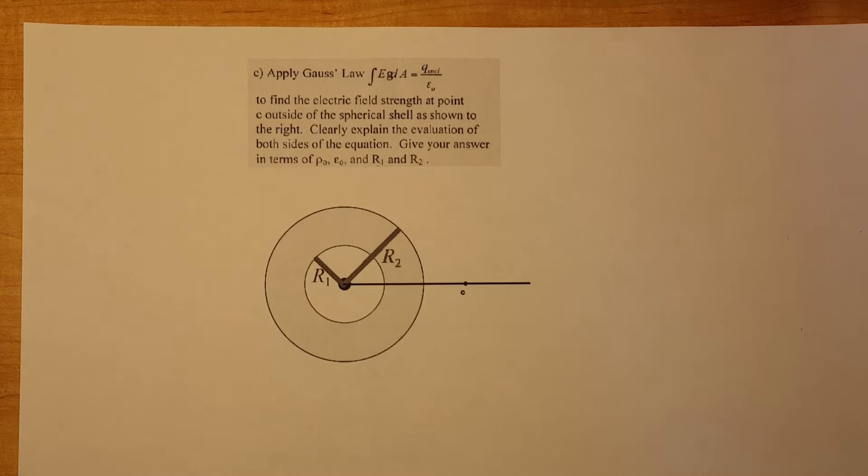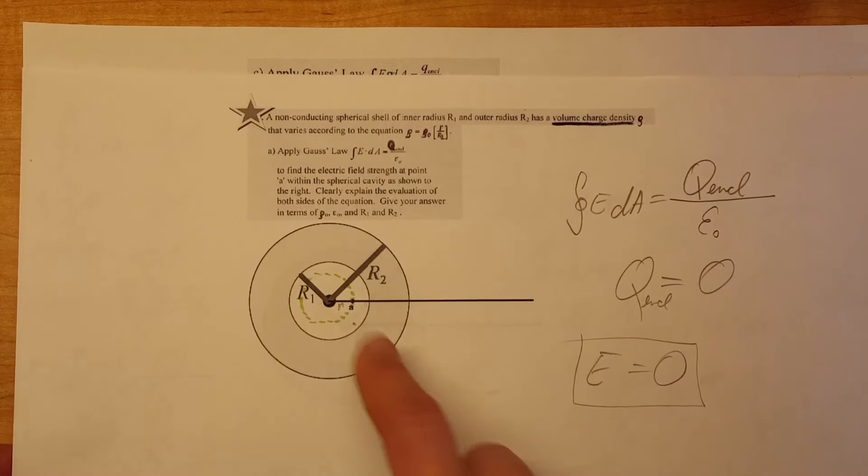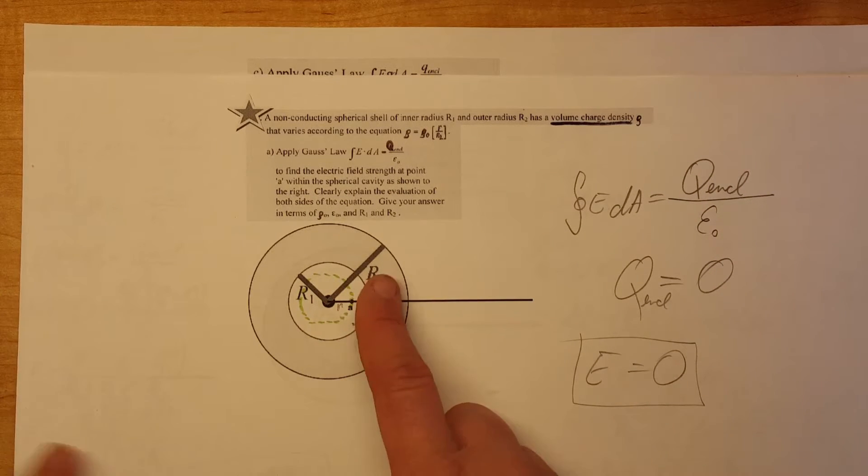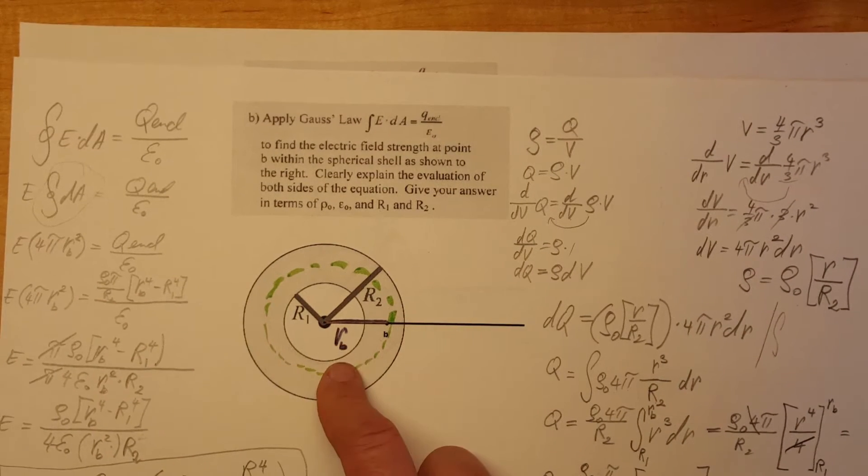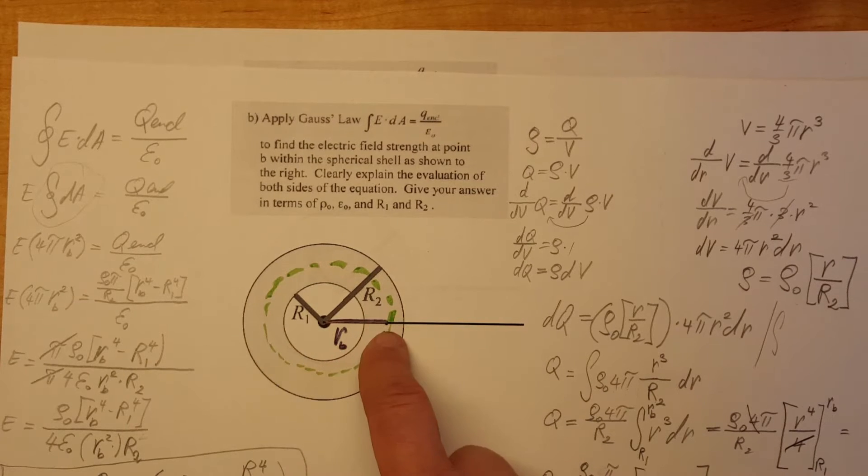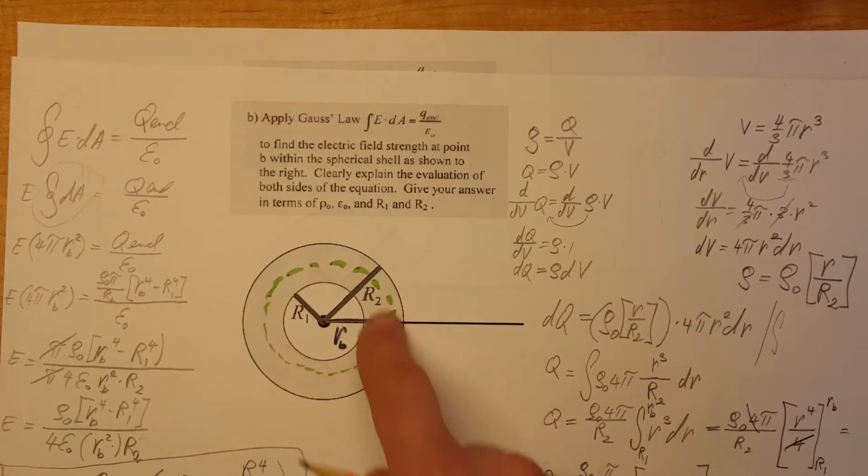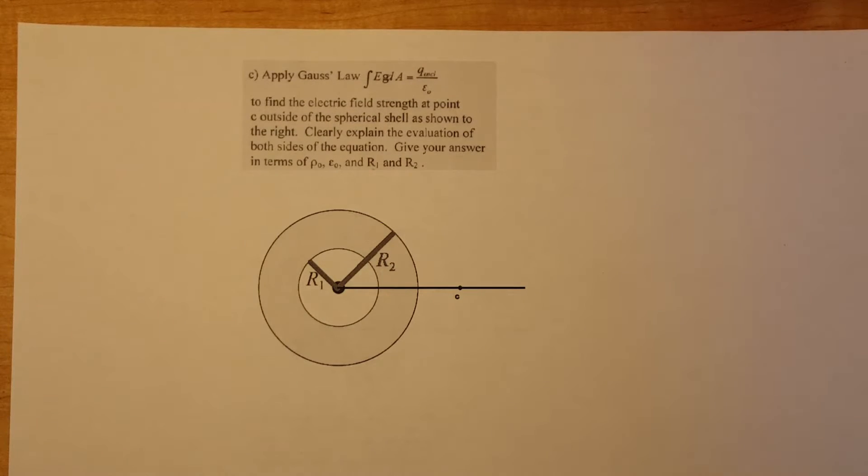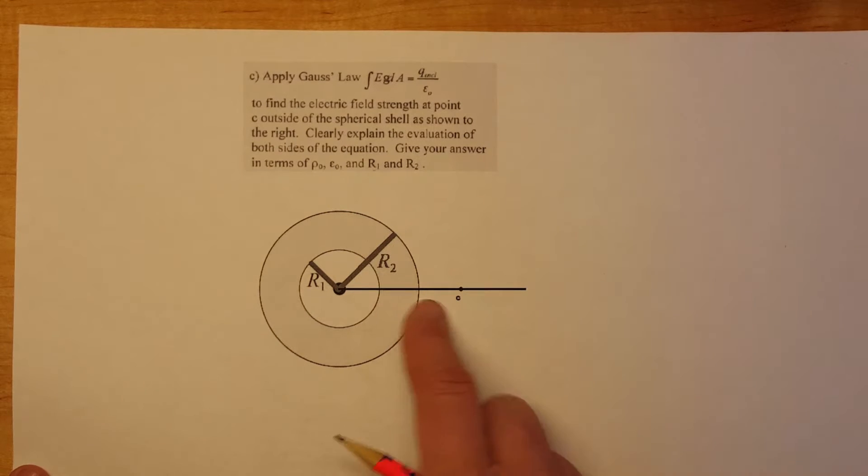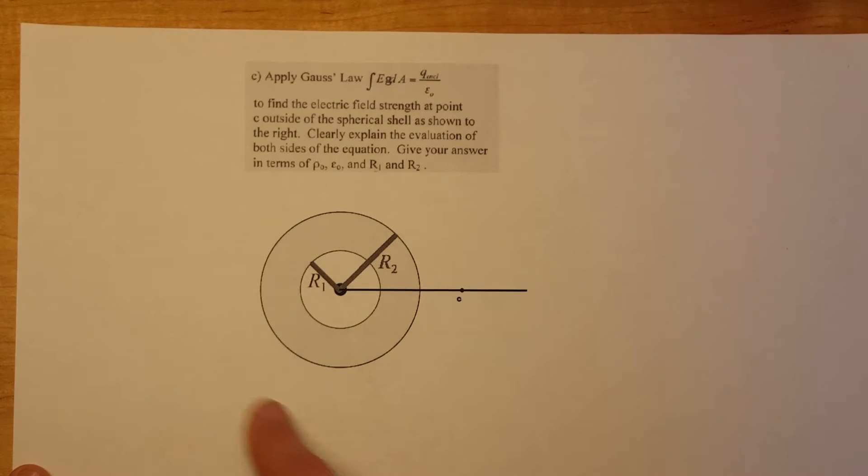Hi! This is our third video for this problem. We're going to continue applying Gauss's law to find electric field. In the first video we found the electric field for a non-conducting spherical shell. We found the electric field inside the cavity at point A. We found it to be zero. The second video we moved to point B and found the electric field inside the non-conducting material. Now we're going to move all the way to point C which will be outside of it.